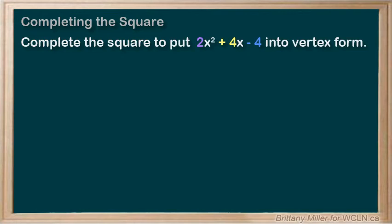Okay, one more. I need to show you what to do if a isn't 1. Consider 2x squared plus 4x minus 4. We're going to take that 2 out of the first part of our equation. So it becomes 2 times x squared plus 2x and then minus 4 on the end there.